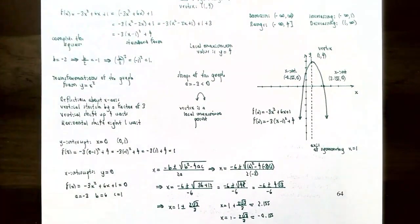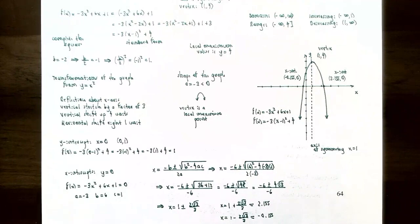To summarize: after rewriting a quadratic function in standard or vertex form, we can identify the vertex, axis of symmetry, domain and range, increasing and decreasing intervals, transformations from y = x², the shape of the parabola, and whether the vertex is a local maximum or minimum. We also found x-intercepts using the quadratic formula and y-intercepts by substituting x = 0. Please ask any questions about these examples or the homework, and I'll see you in the next video on modeling with quadratic functions.